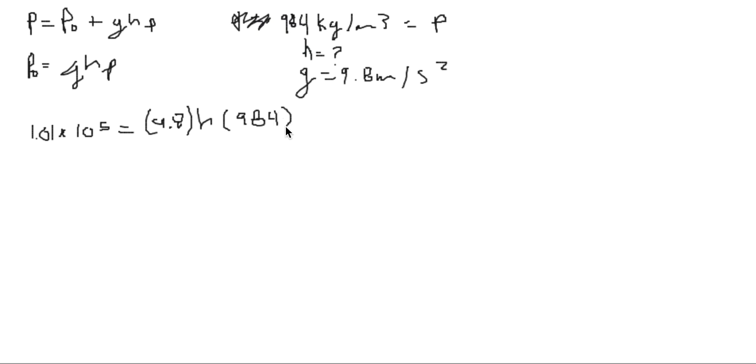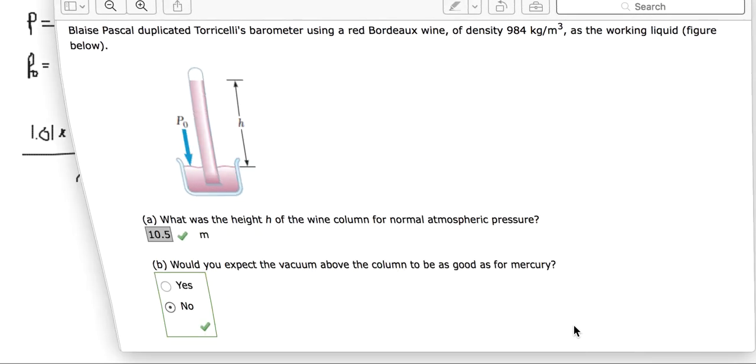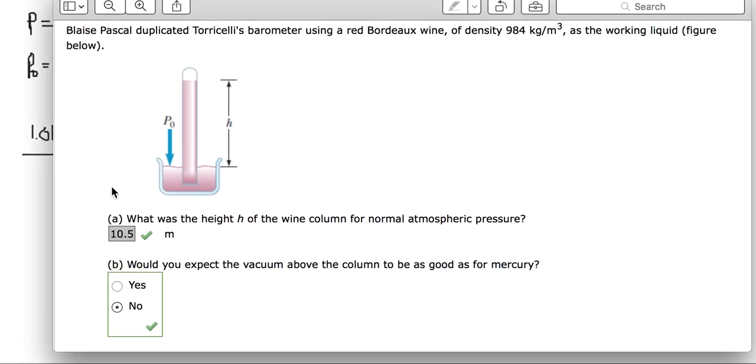Solving for height, we divide. We get 1.01 × 10⁵ divided by 984 divided by 9.8, which gives 10.47 meters or 10.5 meters high.